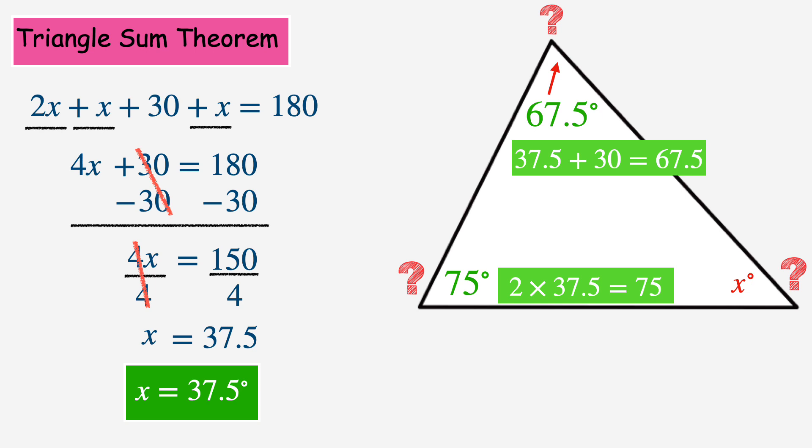And this last angle is just the value of x, or 37.5 degrees. And again, we need to check our angles by adding them together, making sure their sum is 180. And whichever method you choose to add them together, you see that their sum is 180 degrees.